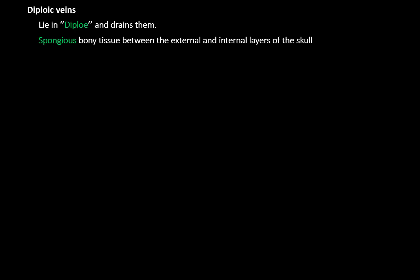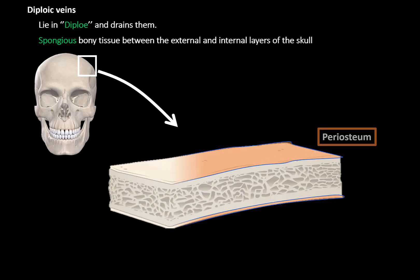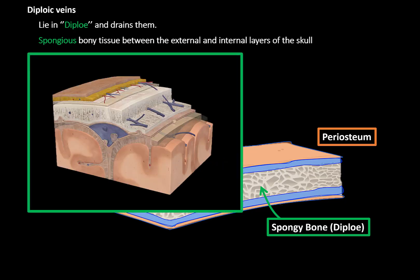Let's briefly talk about the diploic veins. Diploic veins lie in the diploe and drain it. The diploe is a spongy bony tissue between the external and internal layers of the skull. The inner and outer surfaces are covered by periosteum, and the outer and inner parts are compact bone, with the spongy bone — called the diploe — in between. The diploic veins are very small veins located inside the spongy part of the skull. They mainly drain blood into the venous sinuses on the inside, and can sometimes communicate with the external veins of the skull.